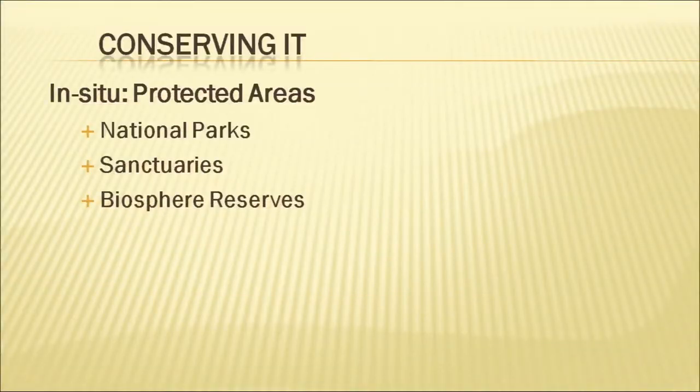Sanctuaries differ from national parks in that they allow some human activity throughout, including tractors with permission. The third category is biosphere reserves, designated by UNESCO. These are large natural areas where life forms are protected, but additionally the communities that live there — their culture, lifestyle, and traditions — are also documented and protected. Biosphere reserves include both wildlife and humans as part of the ecosystem.